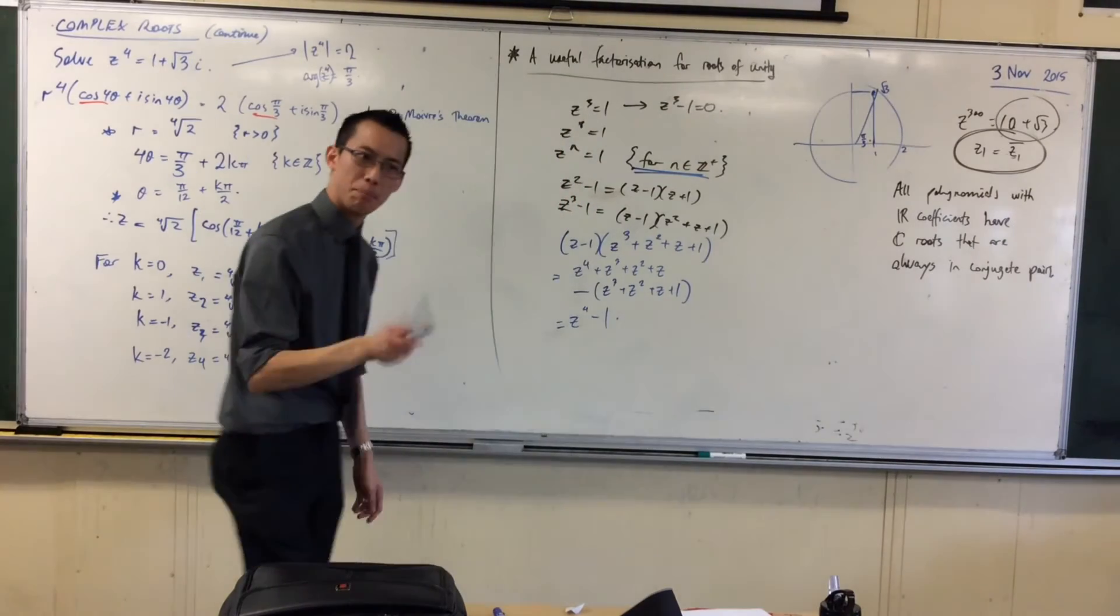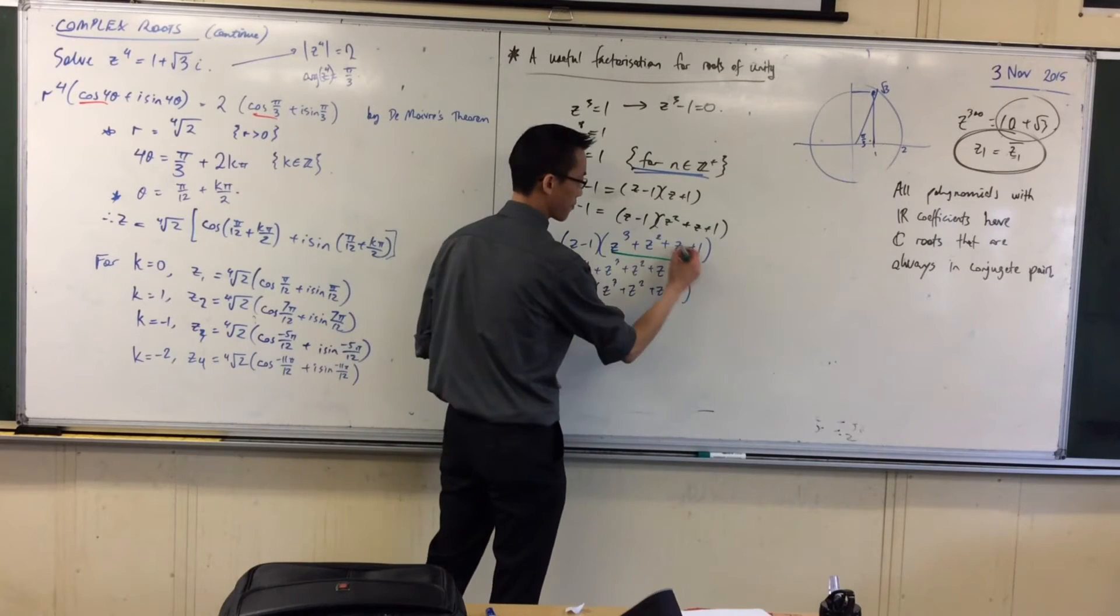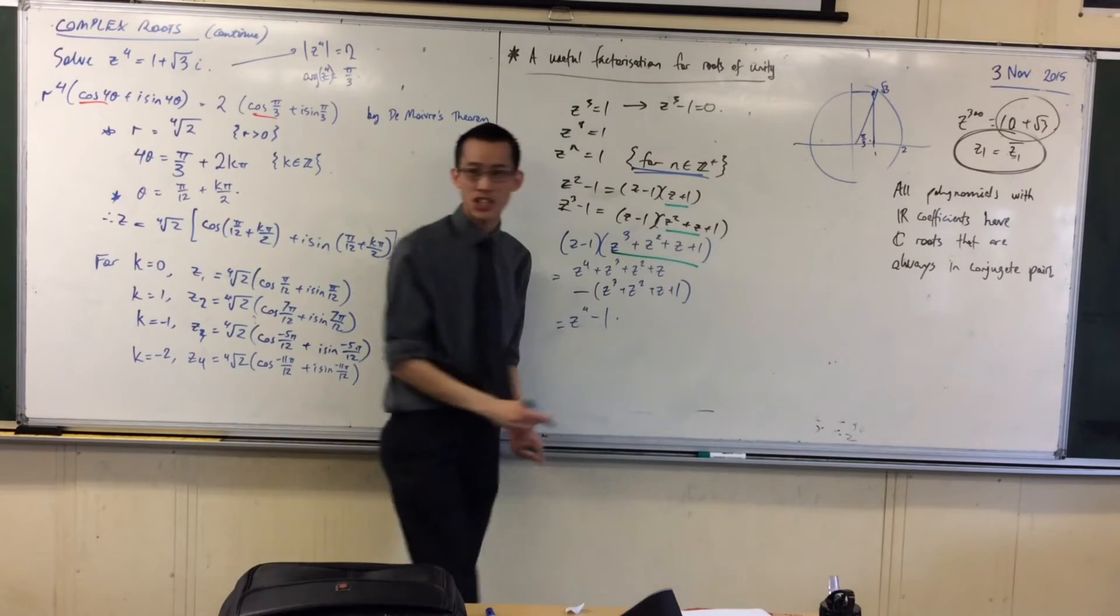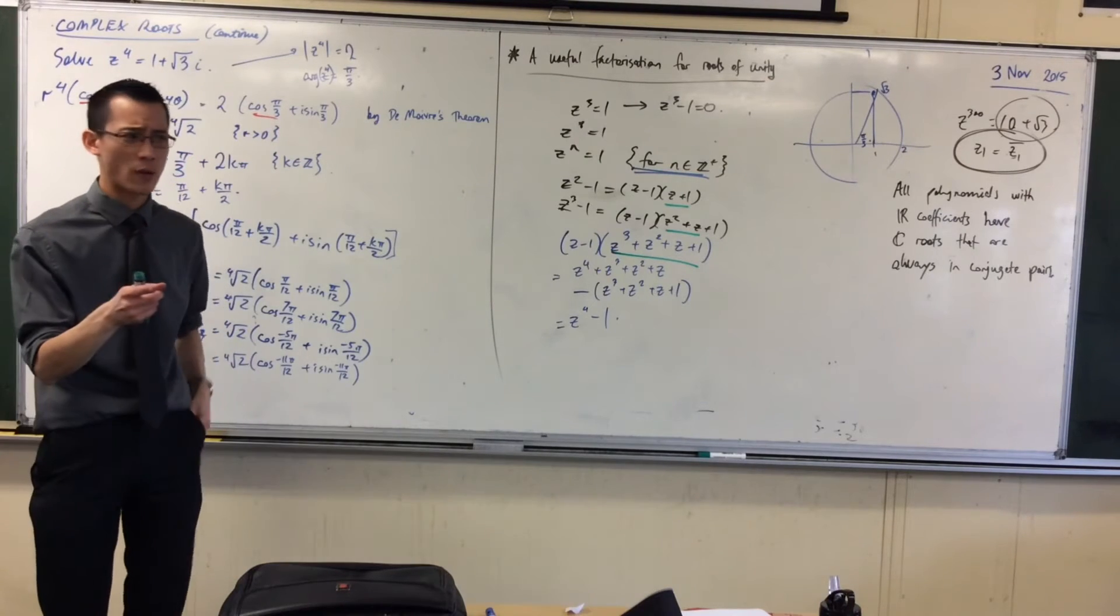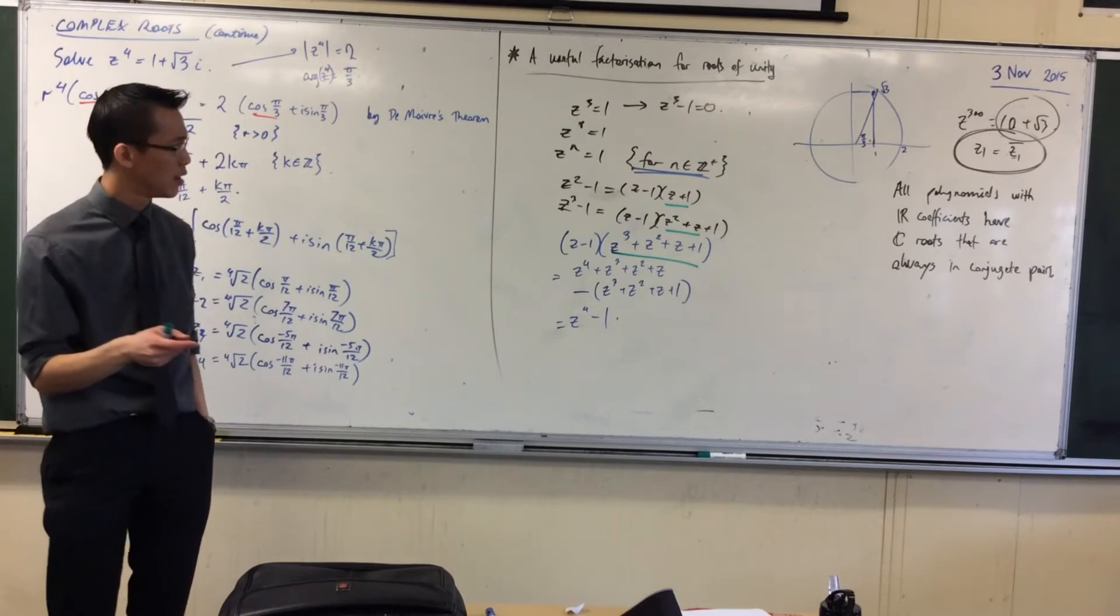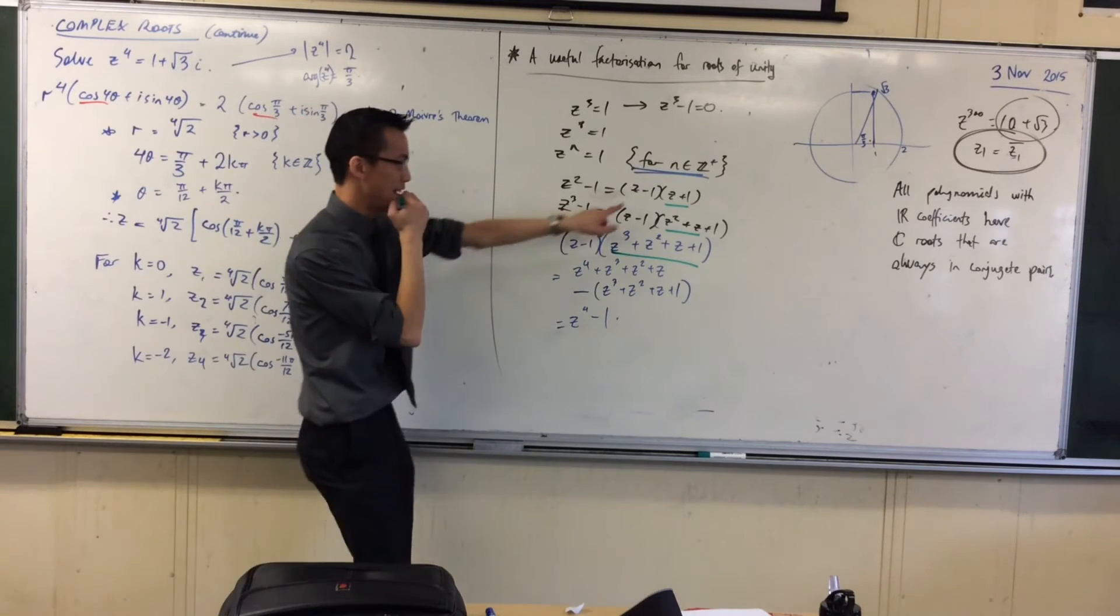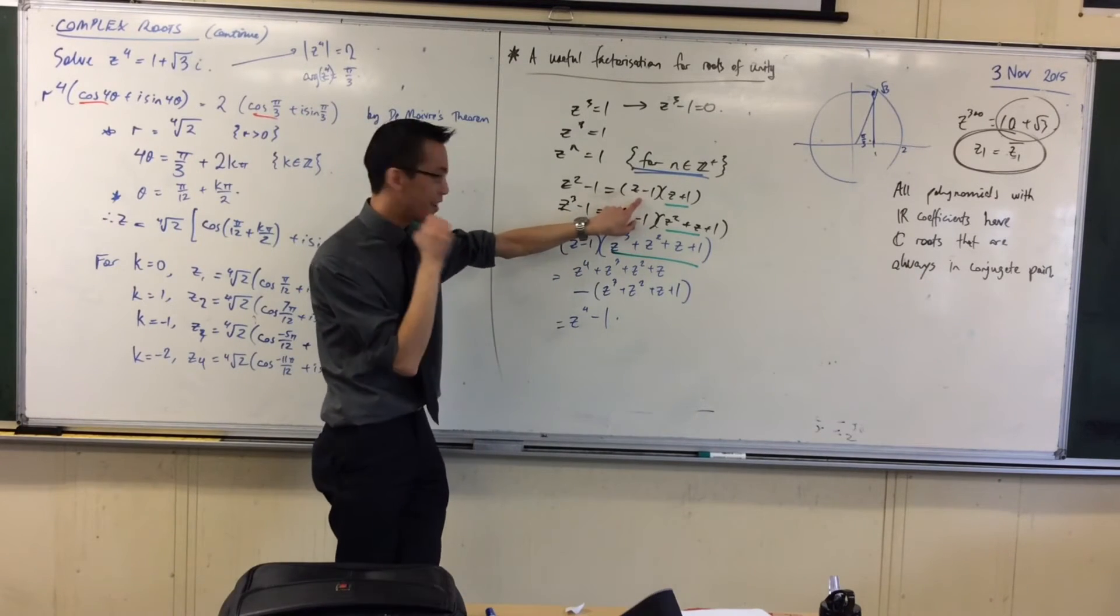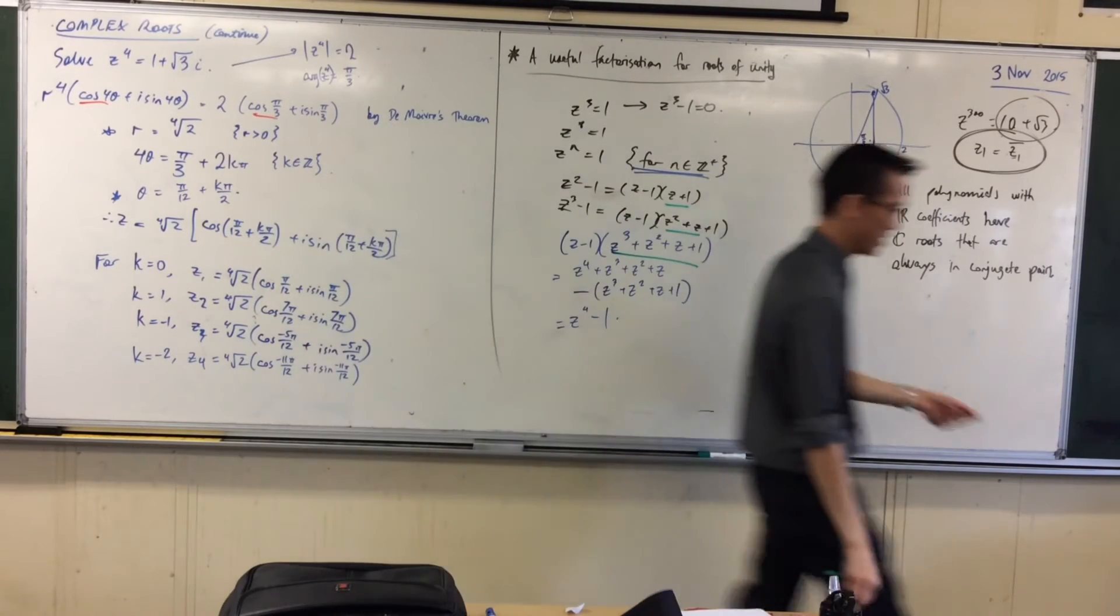Now, you can see the business end of all of these factorizations is really this guy. Each time, because the z take away one, it's the same every single time. By the way, the z take away one is the same every single time. What does that mean about the roots of this equation?